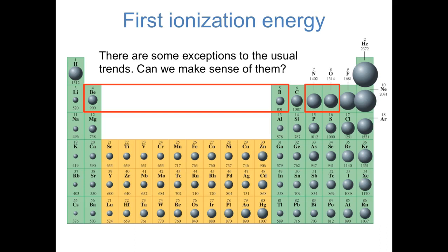There are some small exceptions worth mentioning. As you go from beryllium to boron or from nitrogen to oxygen, you'd expect ionization energy to increase, but it actually decreases slightly. For beryllium to boron: the electron removed from beryllium comes from the 2s orbital, but from boron it comes from the higher energy 2p orbital. The nitrogen-to-oxygen trend is more subtle — both involve removing an electron from the 2p orbitals. But it's particularly energetically favorable to have all electrons with parallel spins, and when you remove an electron from oxygen, it's left with three electrons in the 2p orbitals that can all have parallel spins.